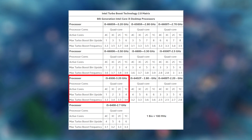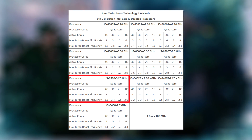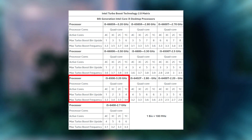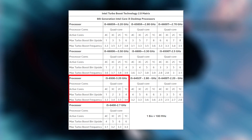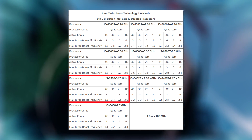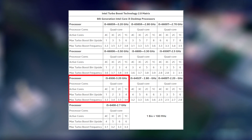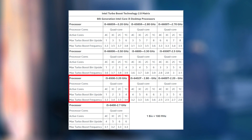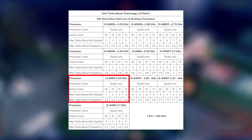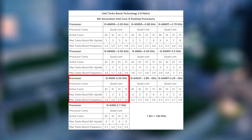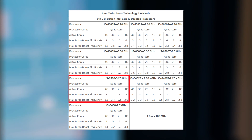When two cores are being used it can only Turbo Boost up to 3.5 gigahertz. When three cores are being used it can Turbo Boost up to 3.4 gigahertz, and when all four cores are being used it Turbo Boosts up to 3.3 gigahertz, if power is not an issue.